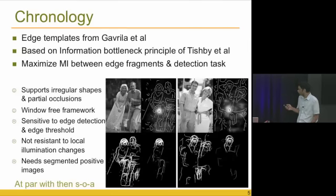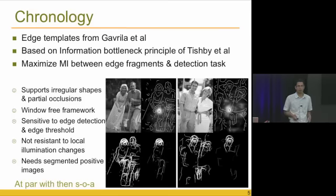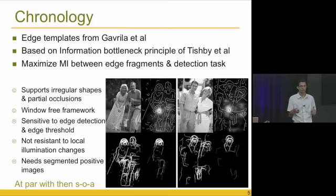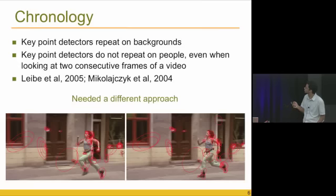There was also work by Gavrila et al. in 1998 using edge templates — edge templates of people for detecting pedestrians, mainly for Mercedes and BMW research projects. They worked decently well for pedestrians on roads, but when you apply the same approach to generic image detection, it didn't work well. There are several different approaches using edge fragments, but I'll skip those details.